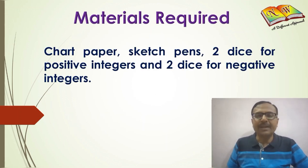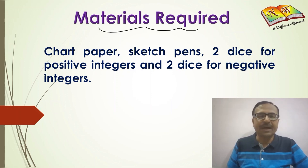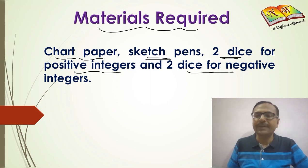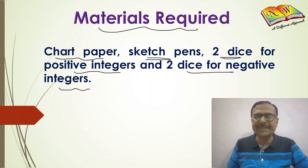The materials required to complete this activity are chart paper, sketch pins, and four dice — two for positive integers and two for negative integers. So let's see how this activity can be performed.